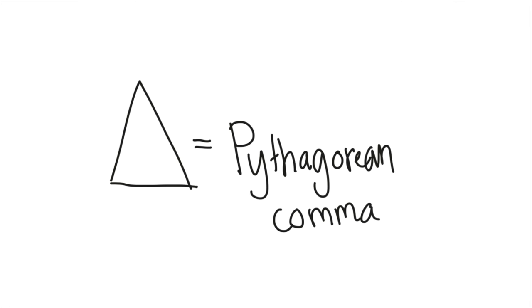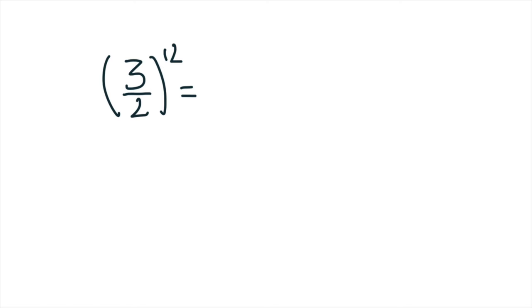And the frequency ratio for a perfect fifth is 3 divided by 2, 3 to 2 or 1 and a half, it's all the same but you could spell it in different ways. And if we're multiplying 12 fifths with each other, the answer is 129.7463. And if we're multiplying 7 octaves on top of each other, you know an octave has the frequency ratio 2 or 2 divided by 1, it's the same.